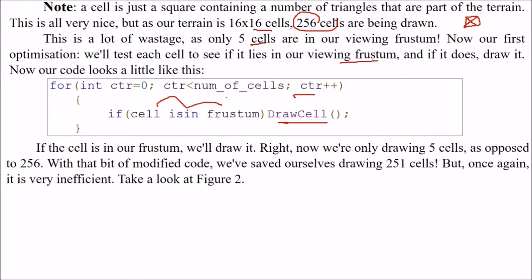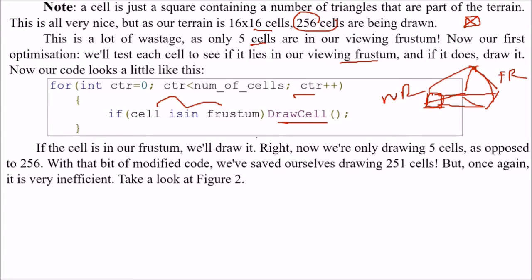The viewing frustum is something like this — it has a near range and a far range. Right now we are only drawing five cells as opposed to 256. So we have saved ourselves drawing 251 cells.